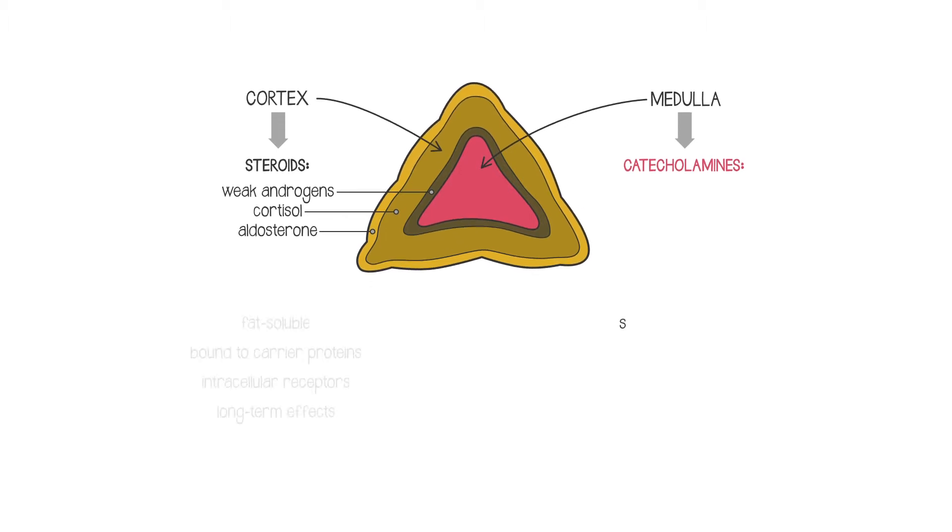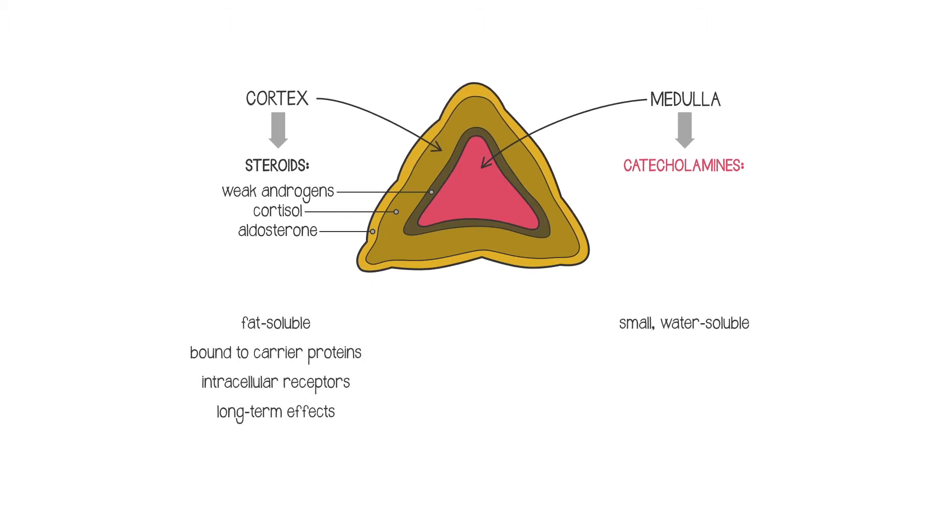Catecholamines are small, water-soluble hormones, which means that unlike the steroid hormones, they travel loose in the blood, work on plasma membrane receptors, and have short-term effects.